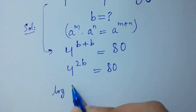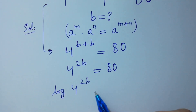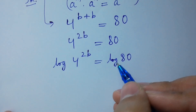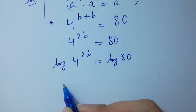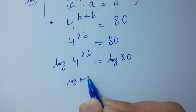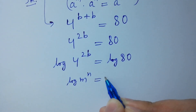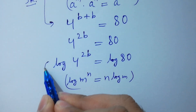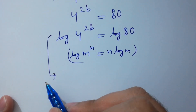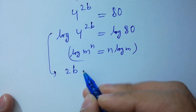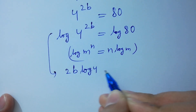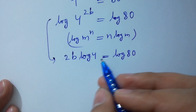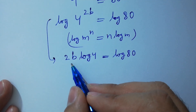Log 4 to the power 2B equals log 80. Since log m to the power n equals n log m, so we have 2B log 4 equals log 80. Let's divide by log 4 on both sides.